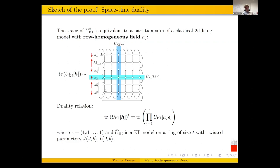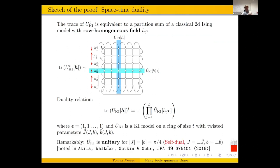We can write the trace of U to the t, the central ingredient of the spectral form factor, as a partition function of a 2D classical Ising model, which can be evaluated through row or column transfer matrices. If time is horizontal and space is vertical, the Floquet propagator is just the column transfer matrix. But there is also a row transfer matrix, and it turns out this row transfer matrix is algebraically exactly the same as the column transfer matrix — just with exchanged parameters. This is a duality relation: the partition function written in terms of two types of transfer matrices. This mapping takes J and B to J-tilde and B-tilde, where J-tilde and B-tilde are in general complex. But for the special values J = B = ±π/4, the model is self-dual, meaning both propagators U and U-tilde are actually unitary matrices.